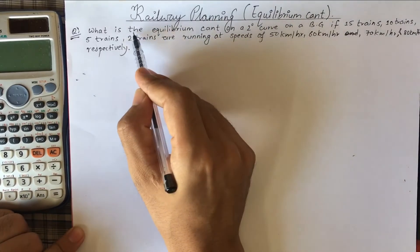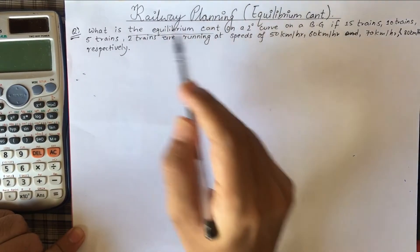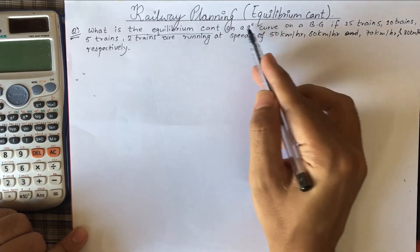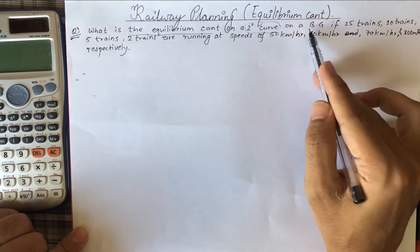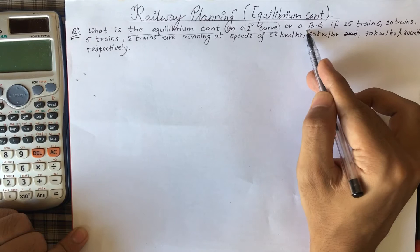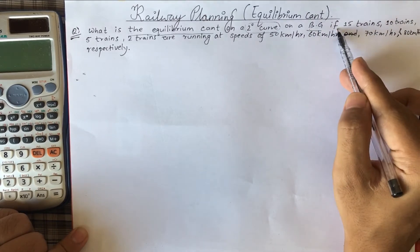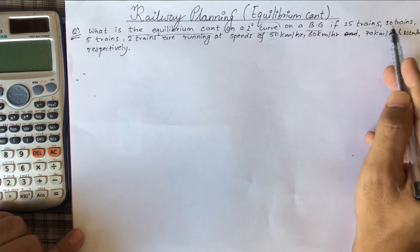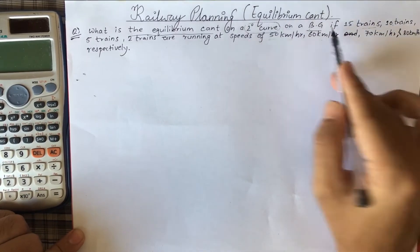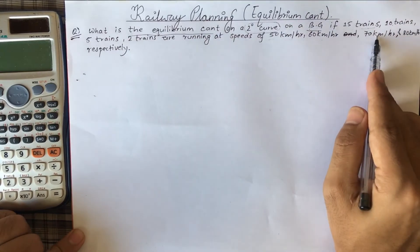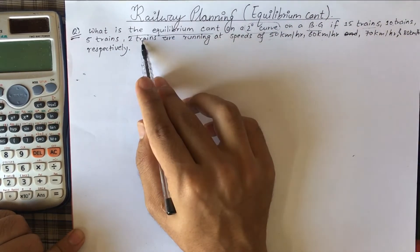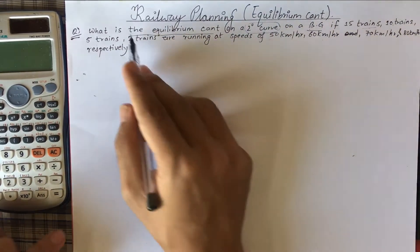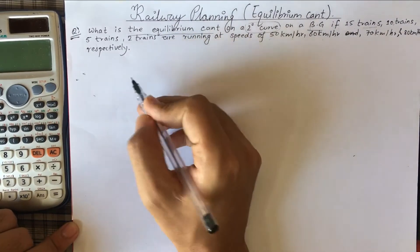Our question saying that we have to find the equilibrium cant on a two degree curve on a BG, BG means broad gauge. If 15 trains, for 15 trains, its speed is 50 kilometer per hour. For 10, 60. Similarly, for 5 trains, 70 kilometer per hour and for two trains, 80 kilometer per hour. So we have to find the equilibrium cant. Let's start.